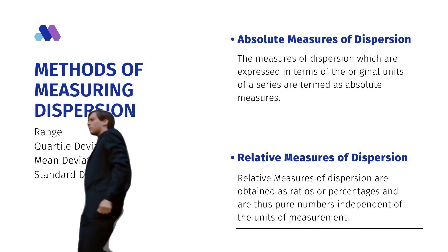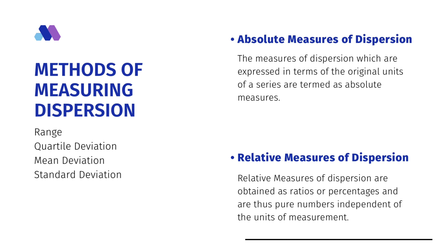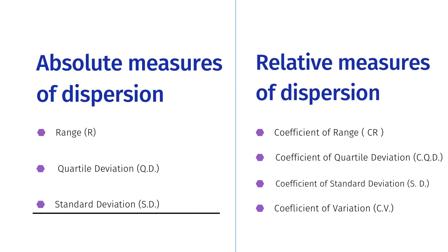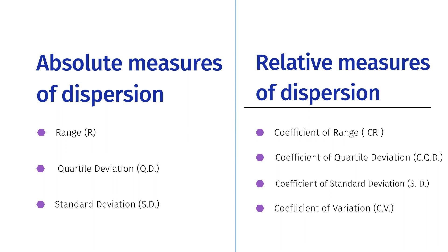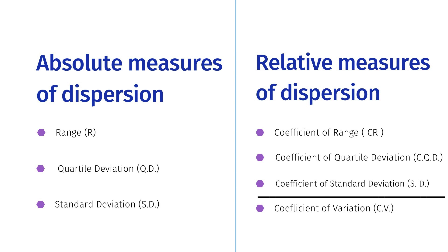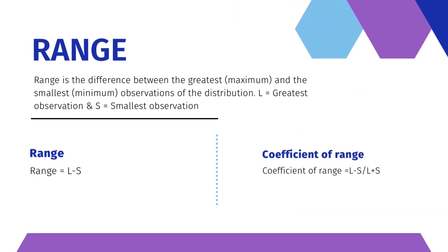Relative measures of dispersion are obtained as ratios or percentages and are thus pure numbers independent of the units of measurement. Absolute measures include range (R), standard deviation (SD), and quartile deviation (QD). Relative measures include coefficient of range (CR), coefficient of quartile deviation (CQD), coefficient of standard deviation (SD), and coefficient of variation (CV).